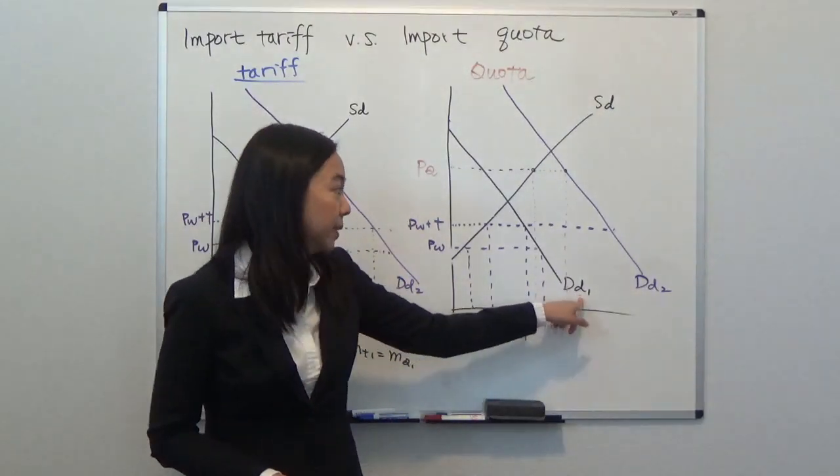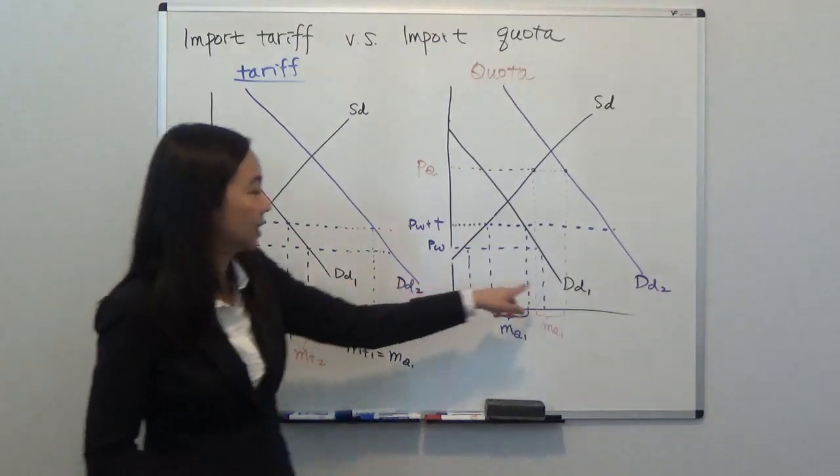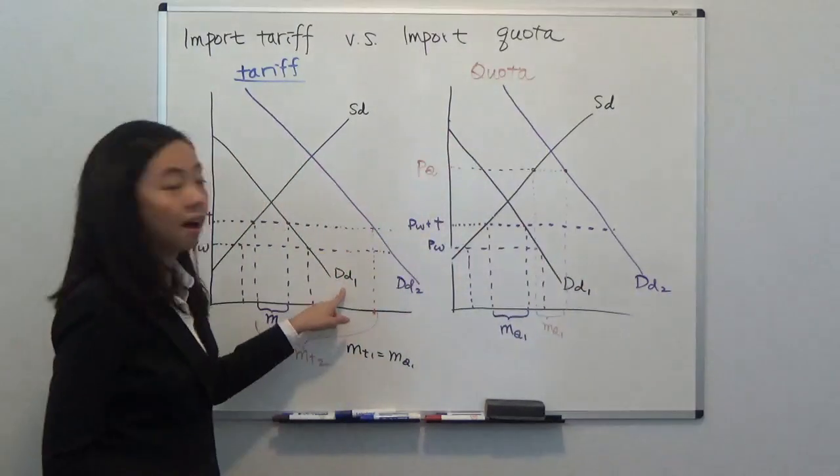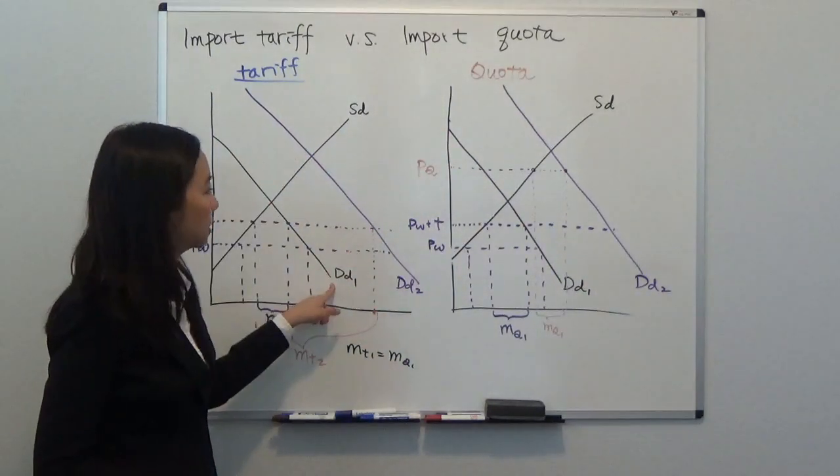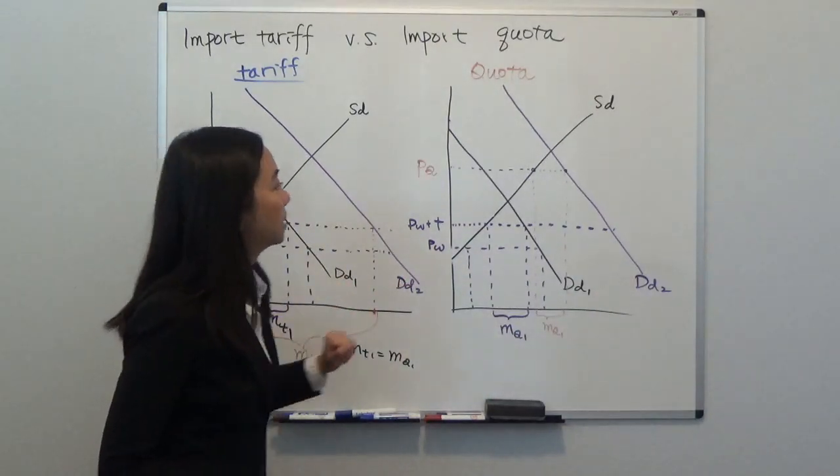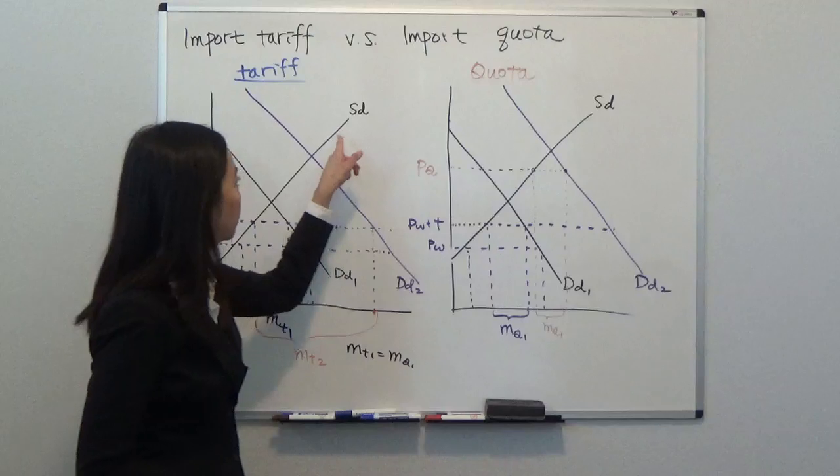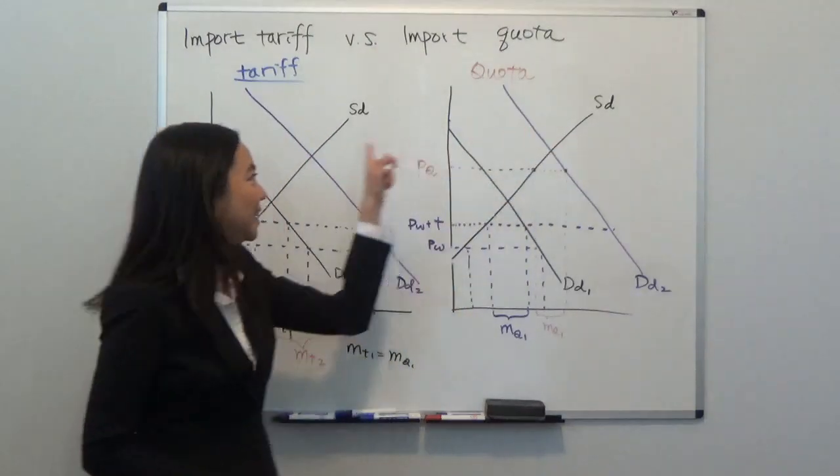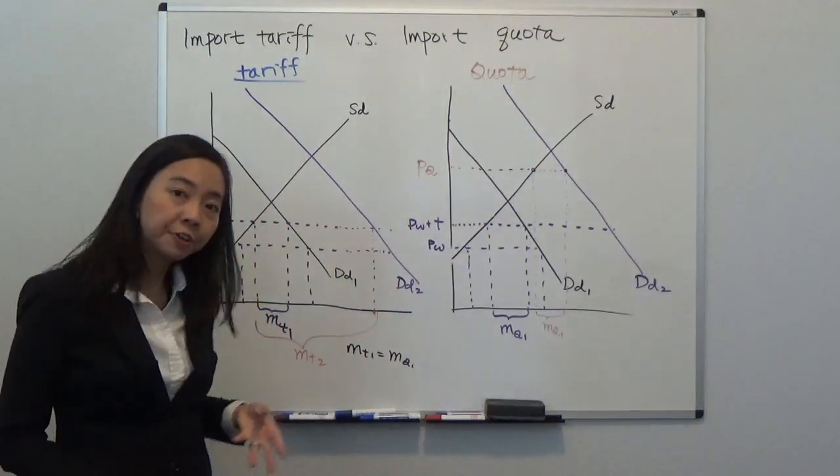You can see that on the right-hand side is quota, on the left-hand side is tariff. Our initial demand is identical and also our domestic supply is identical. The only difference is on the right-hand side we have a quota restriction.